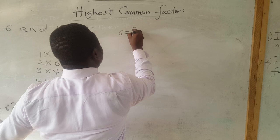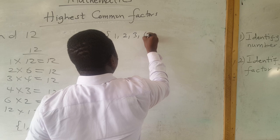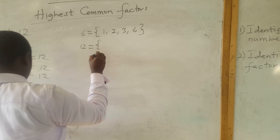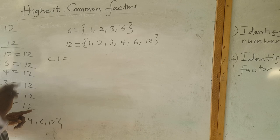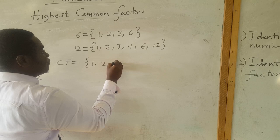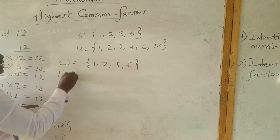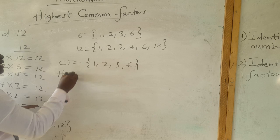So we are going to compare the numbers. The factors of six are one, two, three, and six. The factors of twelve are one, two, three, four, six, and twelve. Looking at our common factors, the numbers that are common are one, two, three, and six. So the highest common factor — which one is the highest among them? Six. So six is the highest common factor. That is our lesson for the day. Thank you.